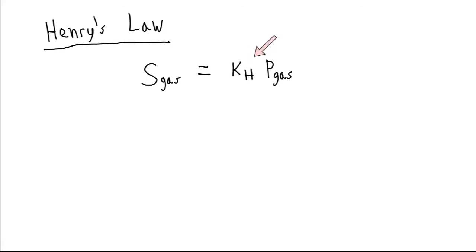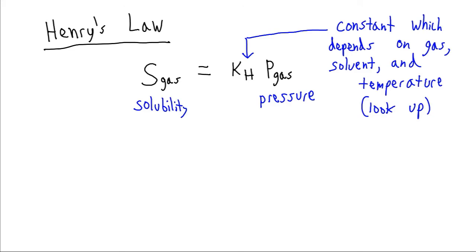This constant here is going to depend on a few factors. It's going to depend on the type of our solvent, the type of our solute, and also the temperature of the substance. So this is something that we're just going to have to look up for those special conditions. But once we know this constant, then we will be free to vary the pressure however we like, and we will automatically know how much of the gas will be dissolved in the liquid under those conditions.